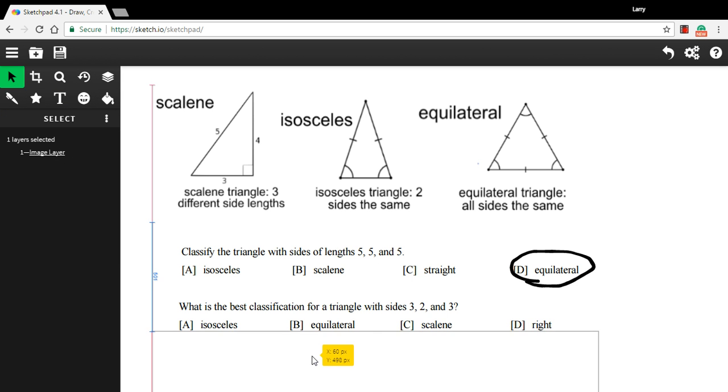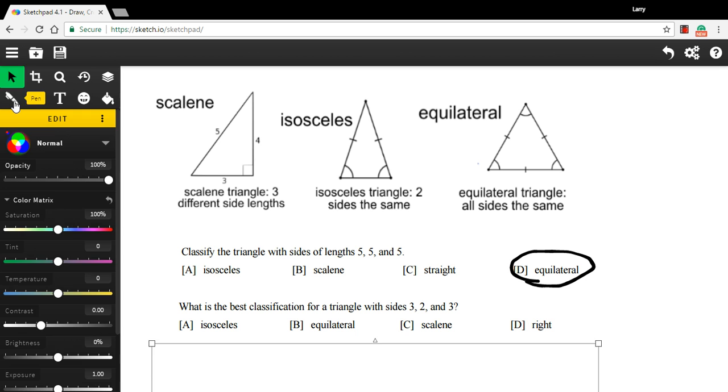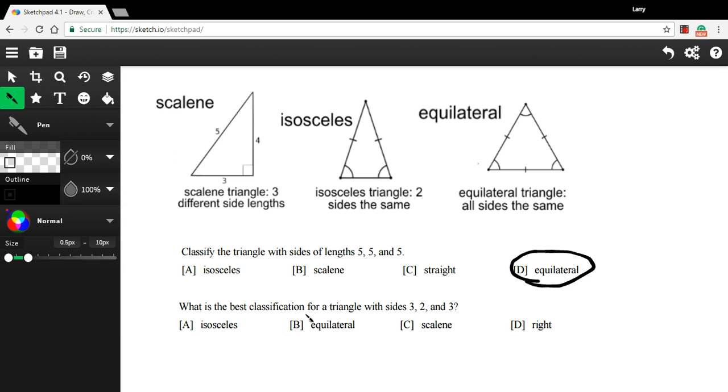Let's try one more here. So this one says, what is the best classification for a triangle with sides three, two, and three? Well, there's a three and a three. That's two sides that are the same, and the third one is different. That is an isosceles triangle.